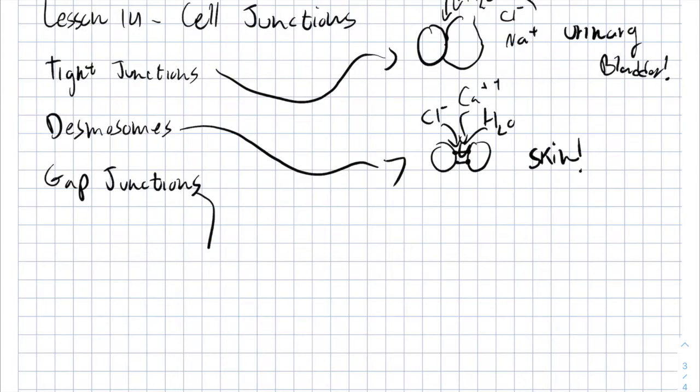Gap junctions are some sort of tunnels between the cells and you can usually find them in cells that require the use of action potential and electrical coupling. For example, cardiac muscles or heart muscles require the passage of ions and electrical coupling in order to work.